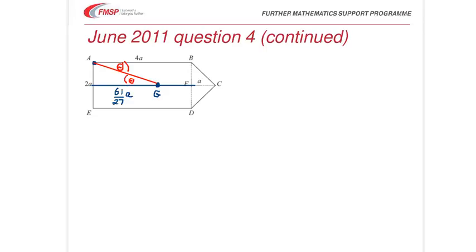So, from that triangle, it's easy to see that tan theta is A over X bar, as we called it. In other words, A over 61 over 27A. Which is 27 over 61. That's tan theta.